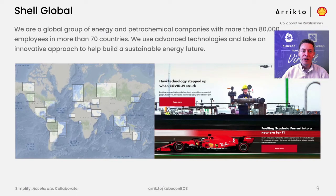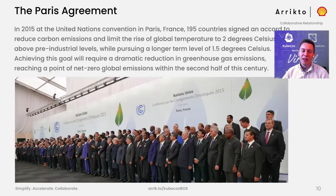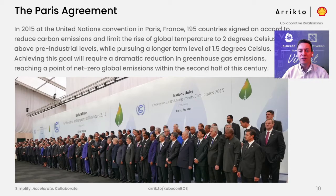Let me start by introducing Shell Global. We're a group of energy companies with more than 80,000 employees in over 70 countries. We use advanced technologies to innovate and help build a sustainable energy future. In 2015 in Paris, 195 countries signed an accord to reduce carbon emissions in order to limit the rise of global temperatures to under 2 degrees Celsius above pre-industrial levels. To achieve this goal, humanity must drastically reduce greenhouse gas emissions, reaching net-zero emissions within the second half of this century.